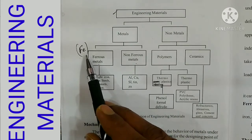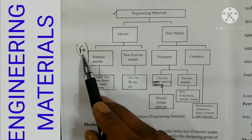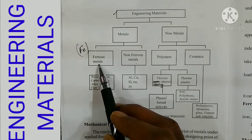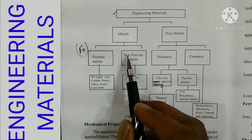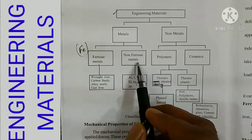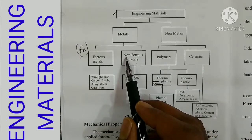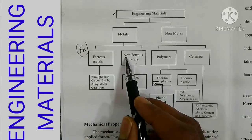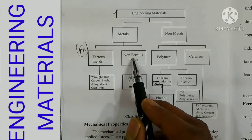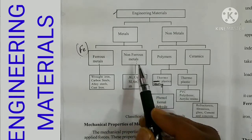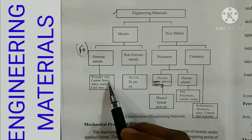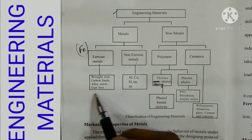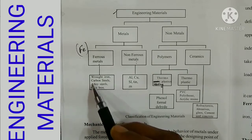Ferrous metals contain iron. Iron is a magnetic material, so iron means ferrous metals. If a magnet attracts a material, it is ferrous; if it does not attract, it is non-ferrous. Examples of ferrous metals are wrought iron, carbon steel, alloy steel, and cast iron.